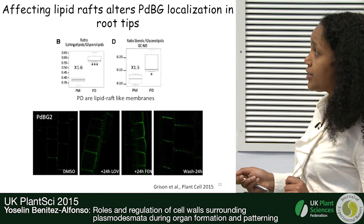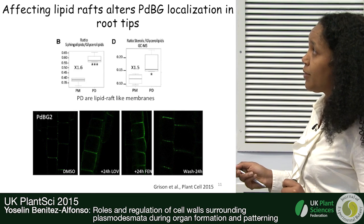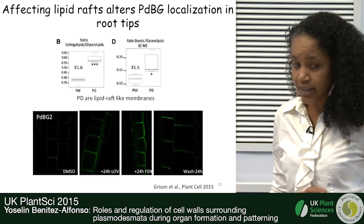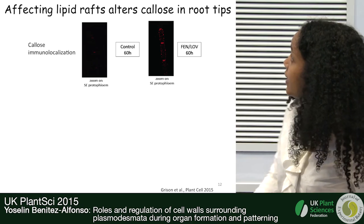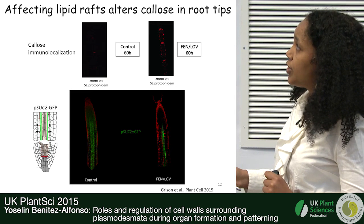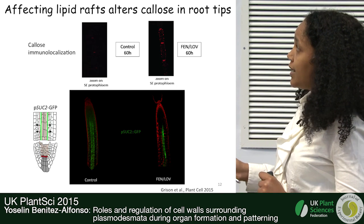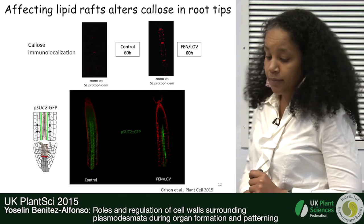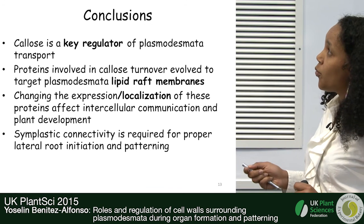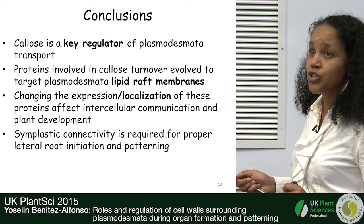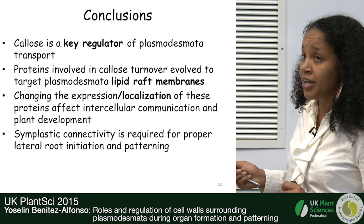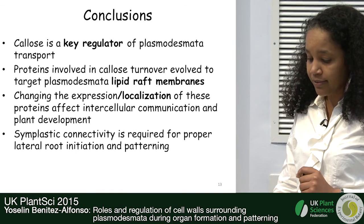When chemicals that distort the sterol composition of the lipid raft — lovastatin and fenpropimorph — are applied, the localization of the PDBG beta-glucanases is lost. Correspondingly, there is increased callose deposition in the protophloem, leading to a restriction in symplastic transport. As you see here with the SUC2-GFP line, there is transport in the root tip in the control, but when the plasma membrane sterol composition is distorted, GFP transport becomes restricted. Not only changing expression but also changing the localization of these beta-glucanases can affect intercellular transport and plant development.